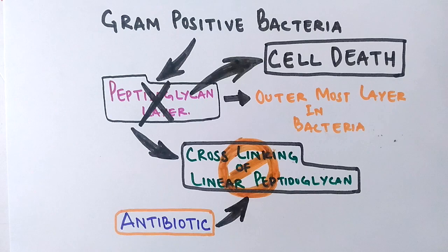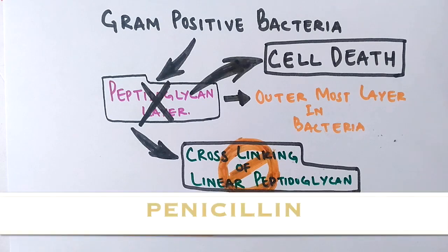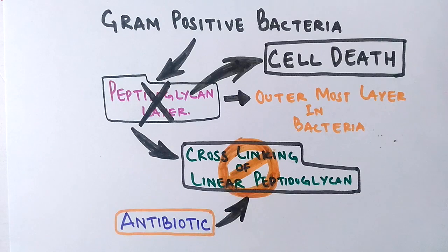The antibiotics which cause inhibition of cell wall synthesis include a group of antibiotics called penicillin, that include amoxicillin, beta-lactam antibiotics, and many others. This is how the antibiotics work in our body to eliminate the pathogens that are causing the diseases.